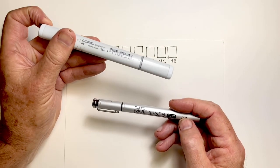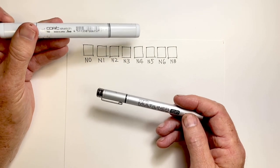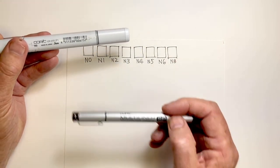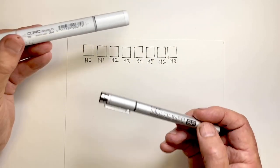I find that alcohol-based markers can smudge some inks, certainly some water-based inks. So I find using the same brand for fine liner and for sketch marker, certainly in the case of Copic, means this doesn't happen.